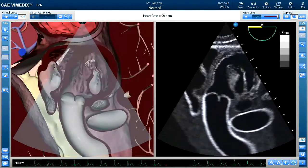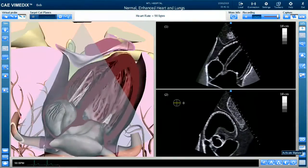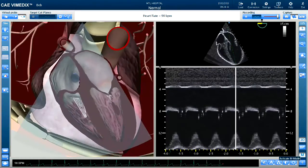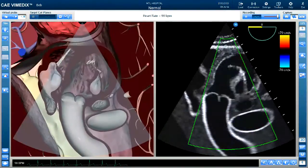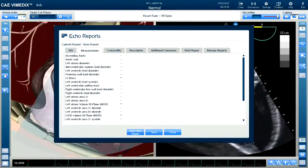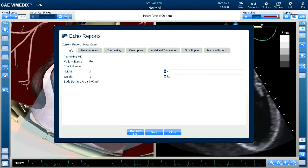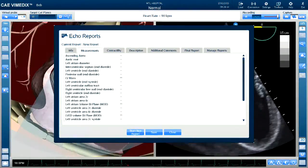The functionalities include the ability to obtain biplane mode, M mode, color Doppler for flow, as well as the ability to complete an echo report. The clinical echo reports can also be exported for instructor review.